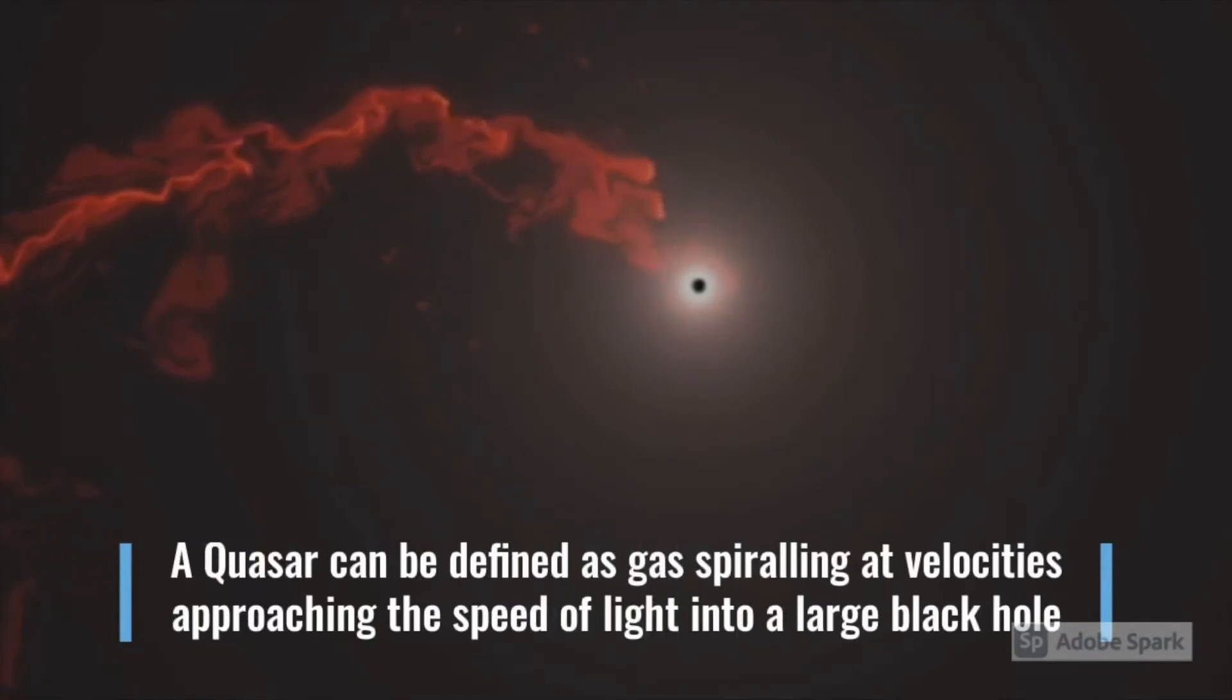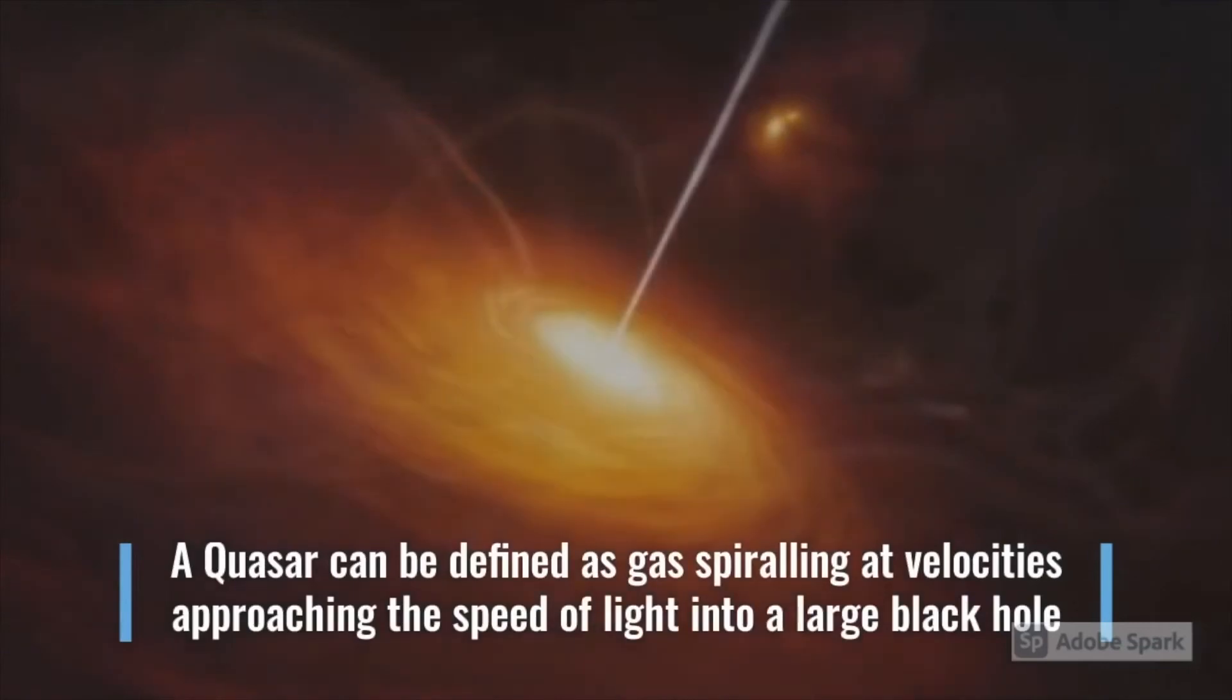Now, let's understand what is a quasar. A quasar is powered by gas spiraling at velocities approaching the speed of light into extremely large black holes. These black holes are billions of times larger than our sun.